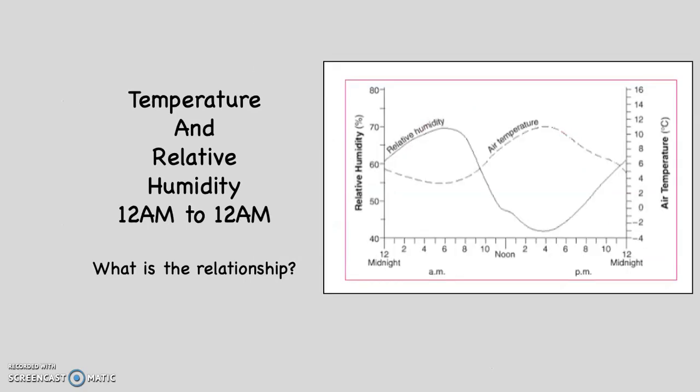Let's take a look at this next graph — a more complete, 24-hour graph, kind of what I just mentioned a moment ago. It goes from midnight to midnight, 12 a.m. to 12 a.m. Notice that when air temperature, represented by the dotted line, is at its lowest, relative humidity, represented by the solid line, is going to be at its highest. And when air temperature is at its highest, relative humidity is at its lowest.